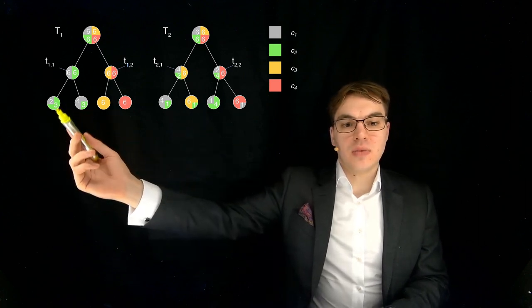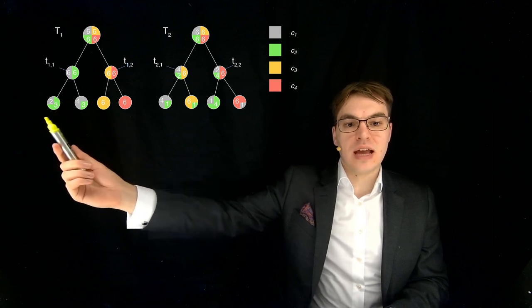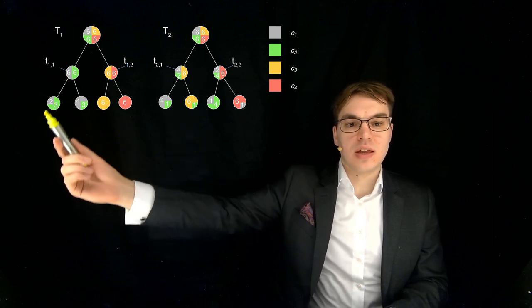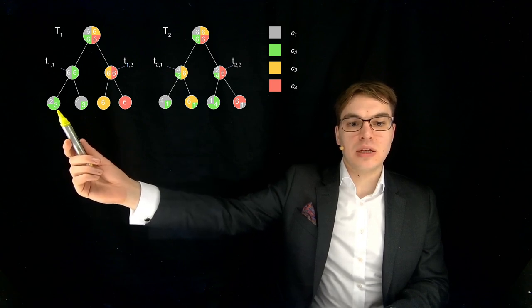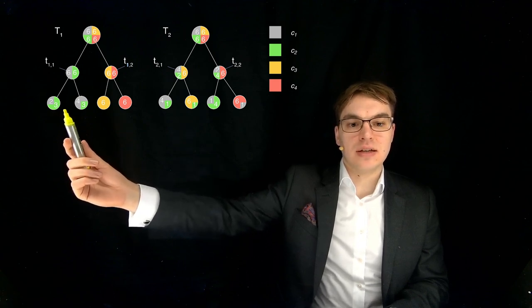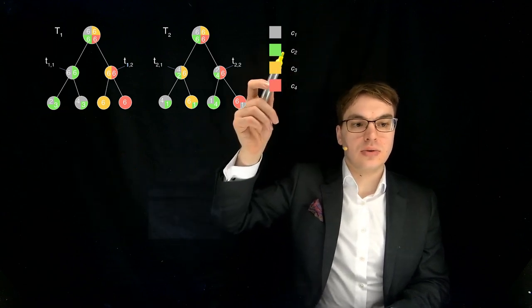So basically this is a majority rule if you want. And so our best guess over here if something gets classified into this leaf node would be it's the same class as this three, so the green class, class two over here.